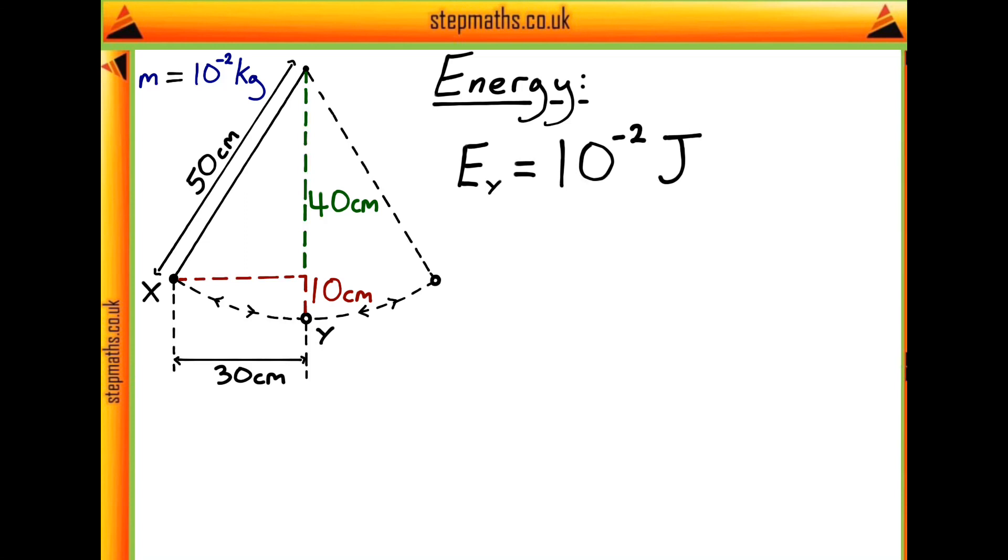Right, now why is this value useful? Well, we can go ahead and find an expression for our energy at y. Since there's no potential energy at this point, it's only going to be the kinetic energy of our bob at y. So this is going to be given by a half multiplied by the mass multiplied by the velocity of our bob squared.